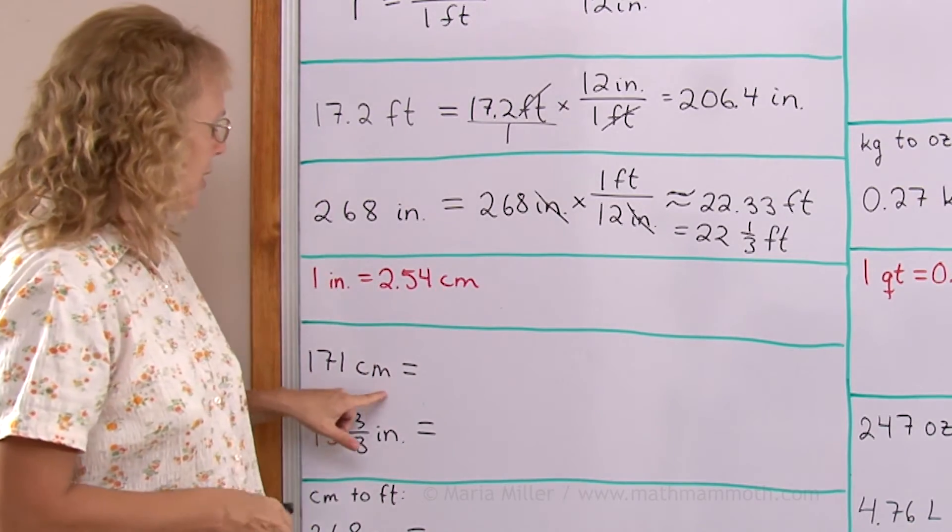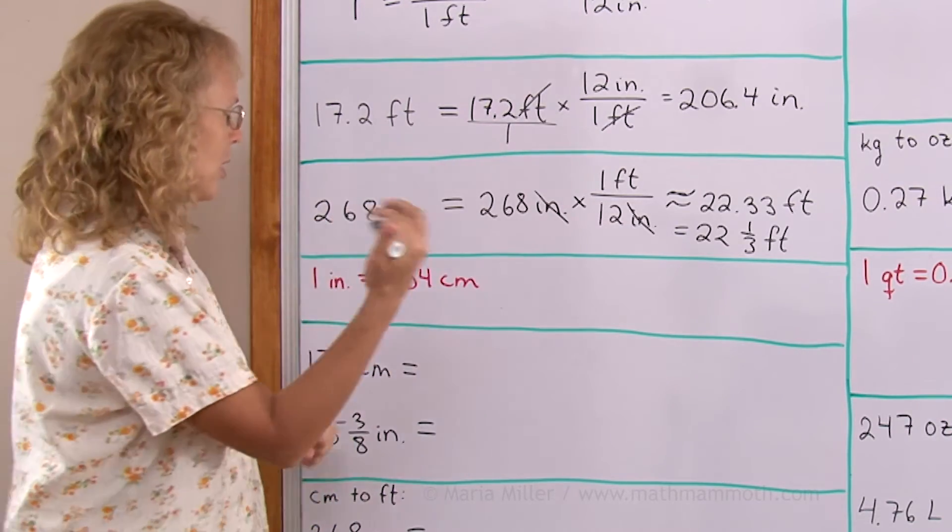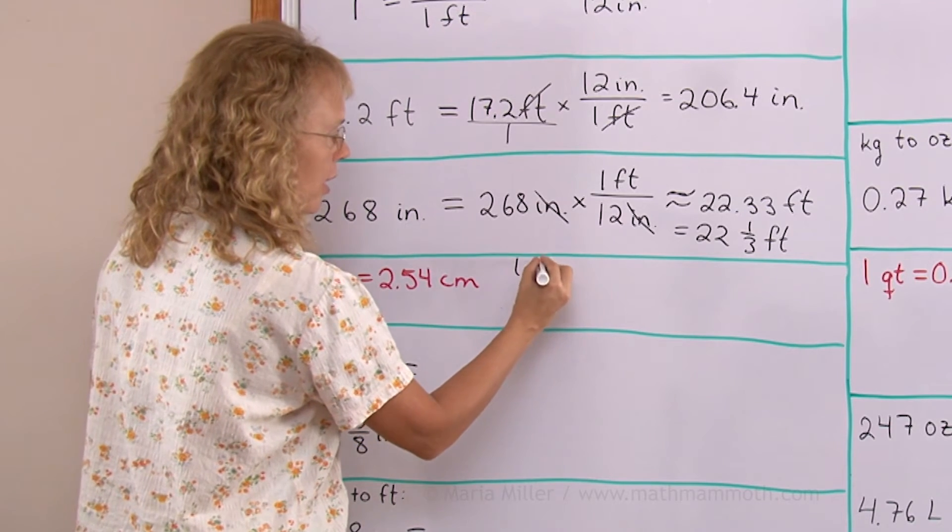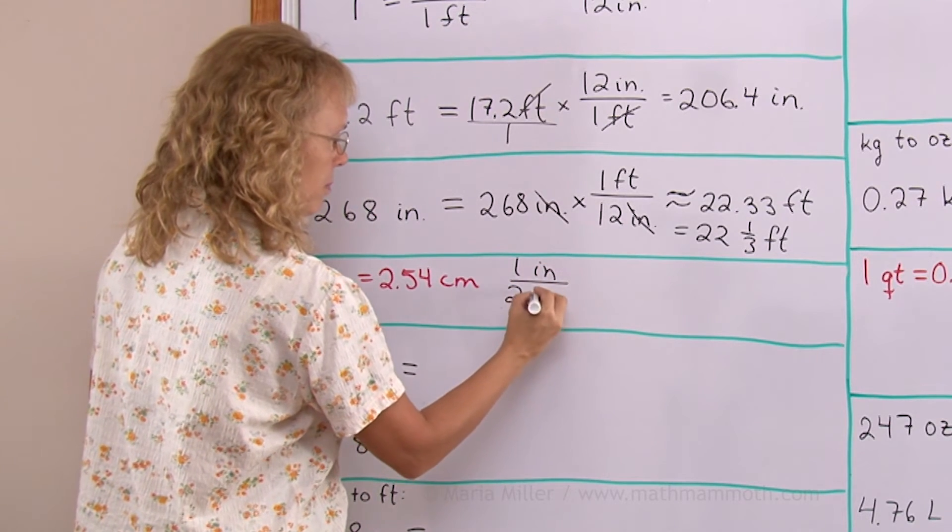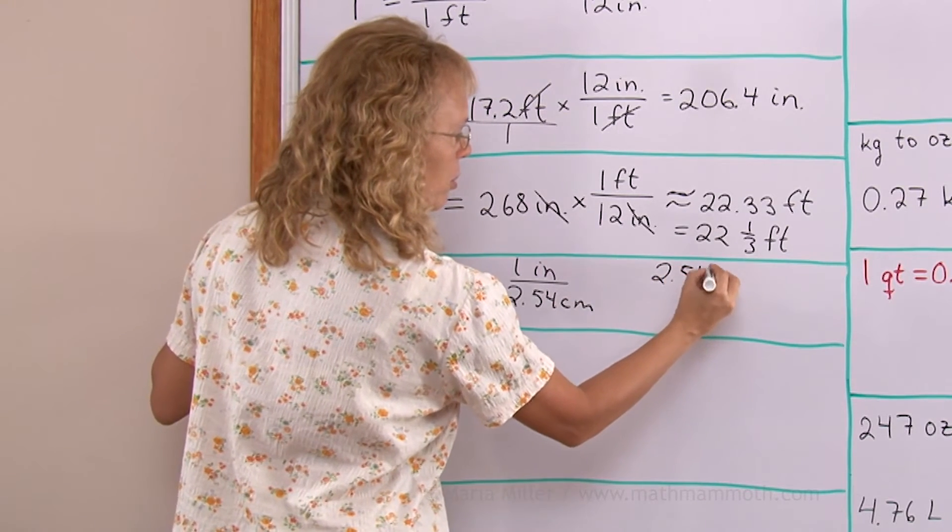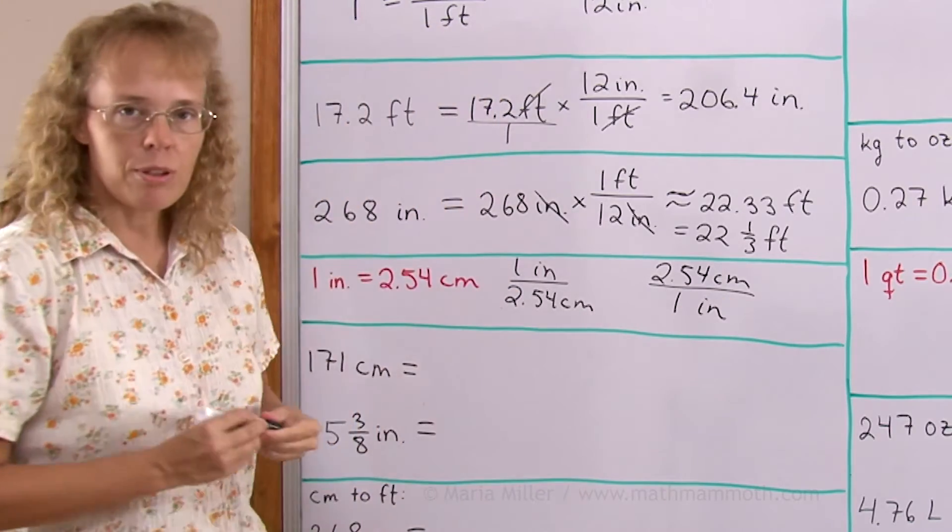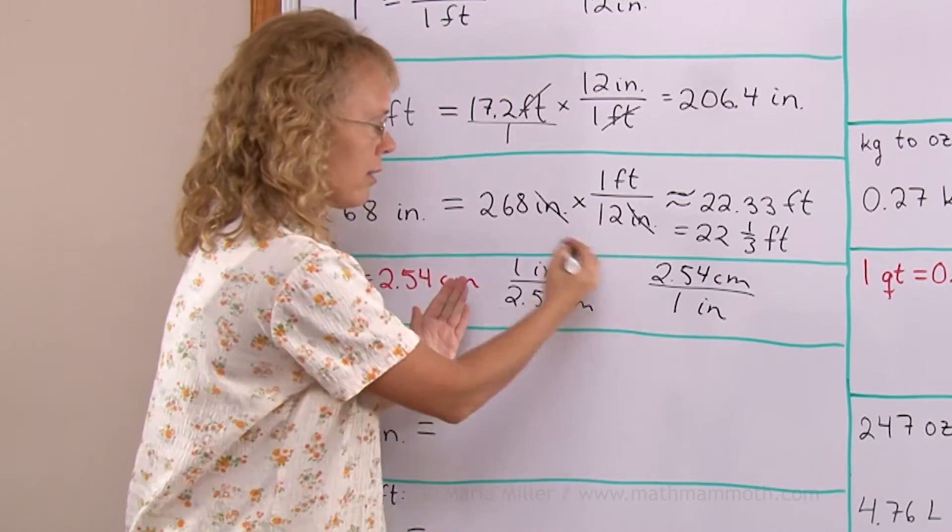And let's say I have so many centimeters. I will first form here my ratio I'm going to use. There's two possible ratios I can get: either this or just the other way around, 2.54 centimeters on top and 1 inch on bottom. Both of these ratios equal 1.